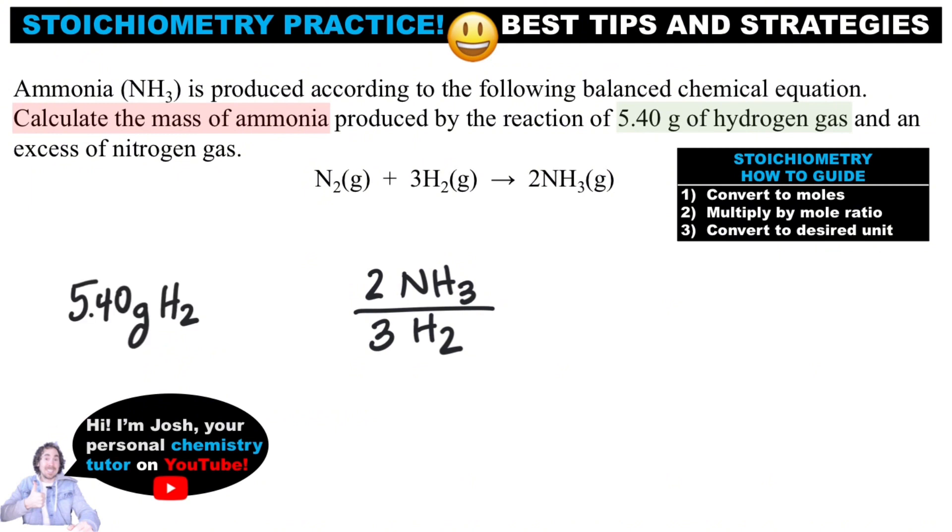First to convert to moles, we'll divide by the molar mass of hydrogen gas. It's H2, so that's 2 times the molar mass of hydrogen from the periodic table. Then we will multiply by the molar ratio from the balanced equation that compares ammonia to hydrogen.